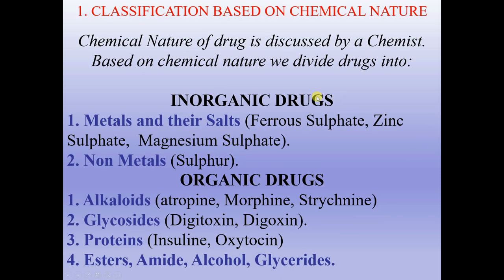Classification based on chemical nature: the chemical nature of a drug is discussed by a chemist. Based on chemical nature, we divide drugs into inorganic drugs — for example, metals and their salts, and non-metals — and organic drugs, including alkaloids, glycosides, proteins, esters, amides, alcohols, and glycerides.